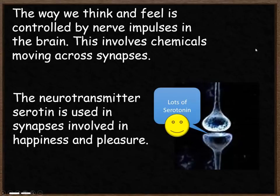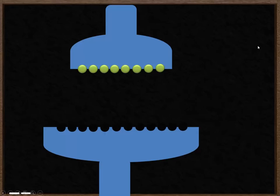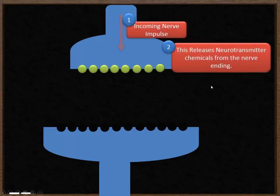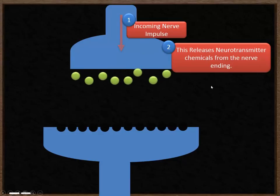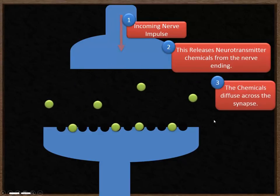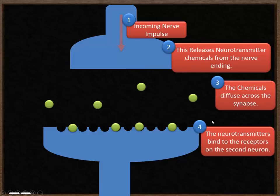We can use a drug to combat that. In a synapse inside the brain, these neurotransmitters are now serotonin. The incoming nerve impulse comes along, releases those serotonin molecules, they bind to the next neuron, and cause a nerve impulse to be sent out — just like before.